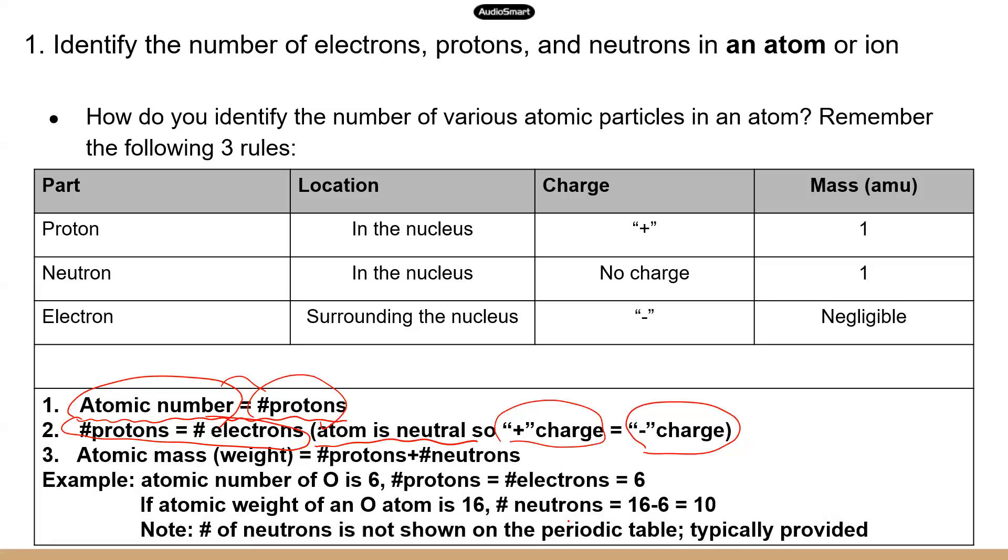Now, the very last rule, this is about the weight or mass. The atomic mass of an element is the number of protons plus the number of neutrons, right? So you don't see electrons on there because electrons don't weigh much. So we just kind of ignore electrons when we calculate the atomic mass.